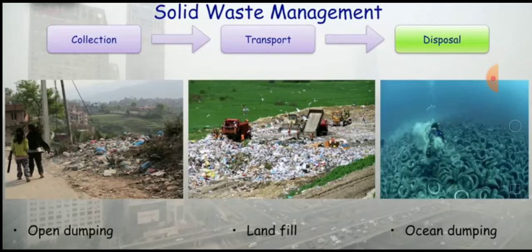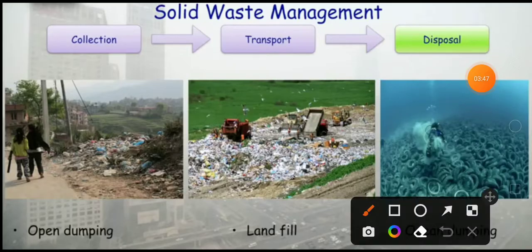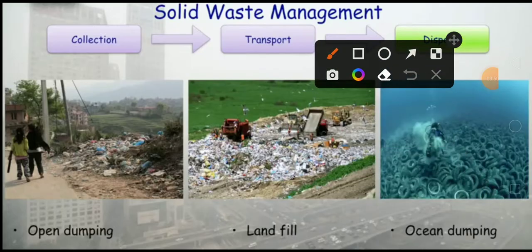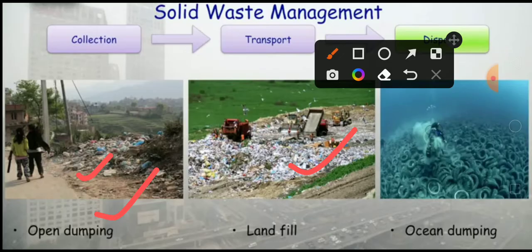Solid waste can be disposed of in three ways. The first is open dumping, as shown here. The second is landfill, where solid waste is decomposed within a fixed area — different waste is placed there and undergoes landfill processing. You can see this landfill type of management in the figure.